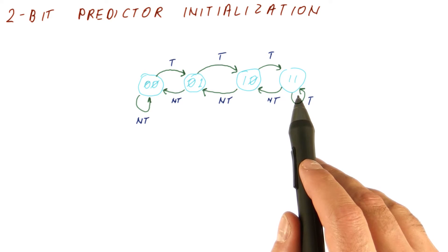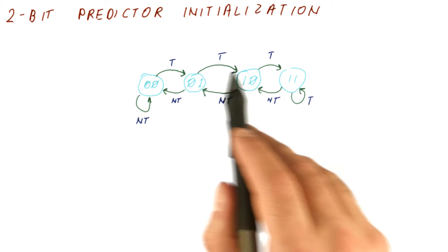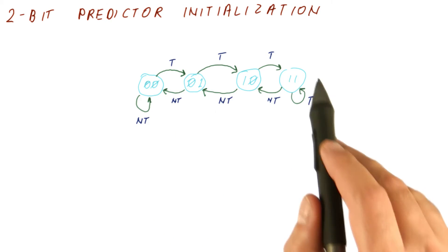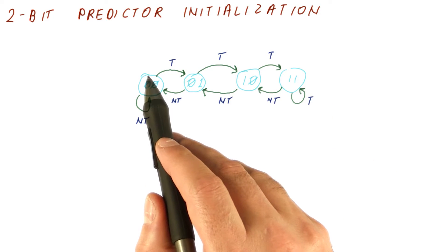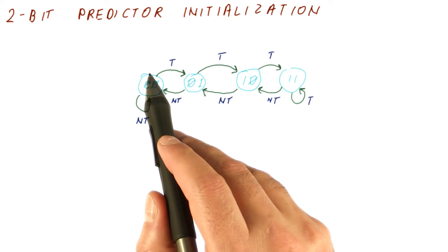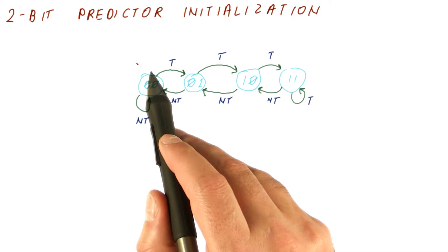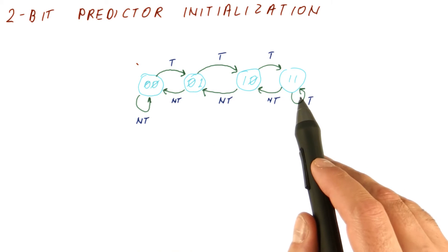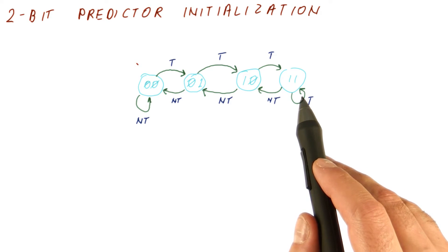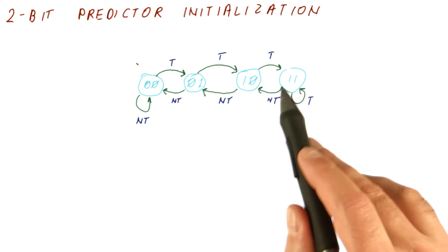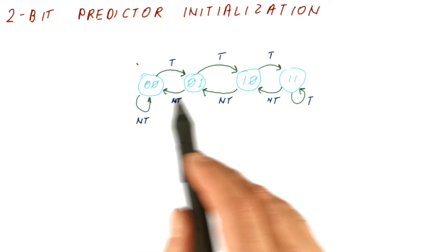Now that we have four possible states for our two-bit predictor, there is an interesting question of does it matter in which state we start the predictor off. With the one-bit predictor, we had to start it in either zero or one state. If we start it in the not taken state, zero, that means if the branch is not taken, we will start predicting correctly right off the bat. If we start predicting zero but the branch is actually mostly taken, we will have a single misprediction before we start doing taken.